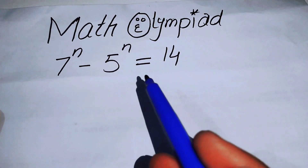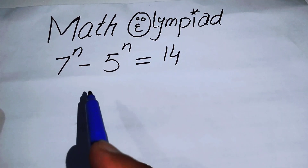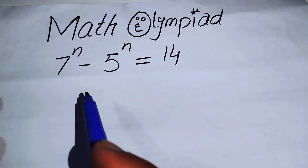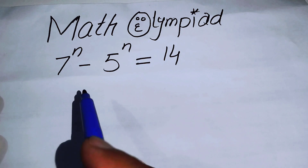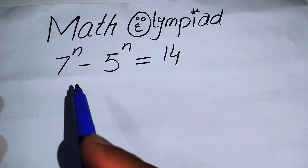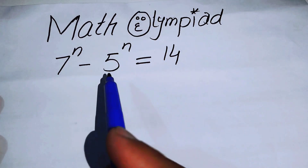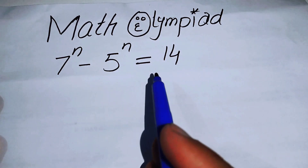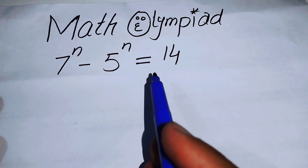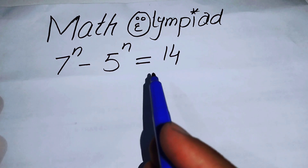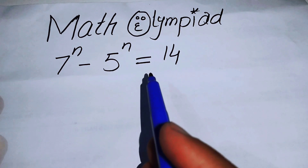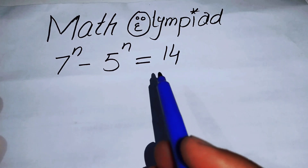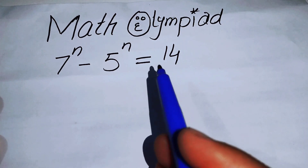Hello everyone, welcome back to the Map of Mathematics. In this video we are going to solve this nice algebra problem: 7 to the power of n minus 5 to the power of n is equal to 14, and we will solve this problem for the real values of n.